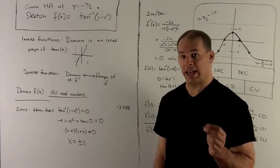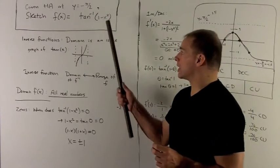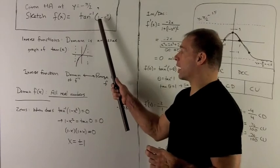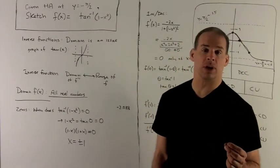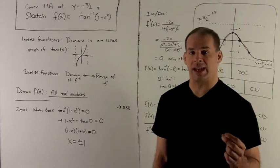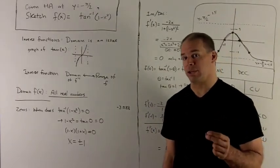We can use any x. Any x stuck into inverse tangent makes sense. It doesn't matter what I use for 1 minus x squared. As long as 1 minus x squared makes sense, and it will if we stick a real number in there, we can use that in the inverse tangent. So to start off, our domain is going to be everything.